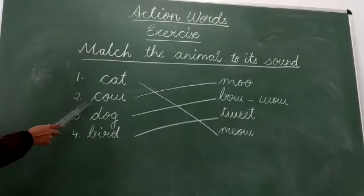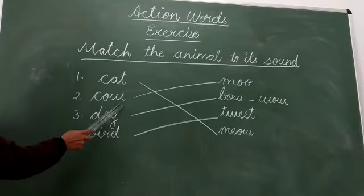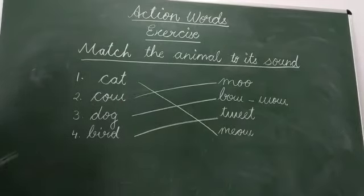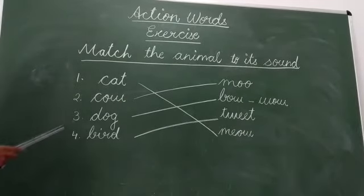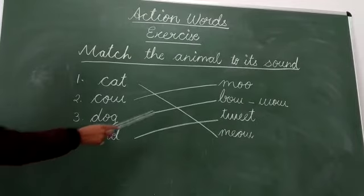Next, cow. What is the sound of cow? Moo. The cow makes moo sound. Third is dog. The sound of dog is bow-wow.